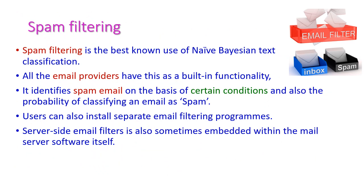The next popular application of Naive Bayes classifier is spam filtering. Nowadays almost all email providers have this functionality as a built-in feature. It identifies spam mail on the basis of certain conditions and the probability of classifying an email as spam. Initially, the mail comes to the email filter, and based on some conditions or probability, the filter identifies whether the incoming mail is spam or normal mail.